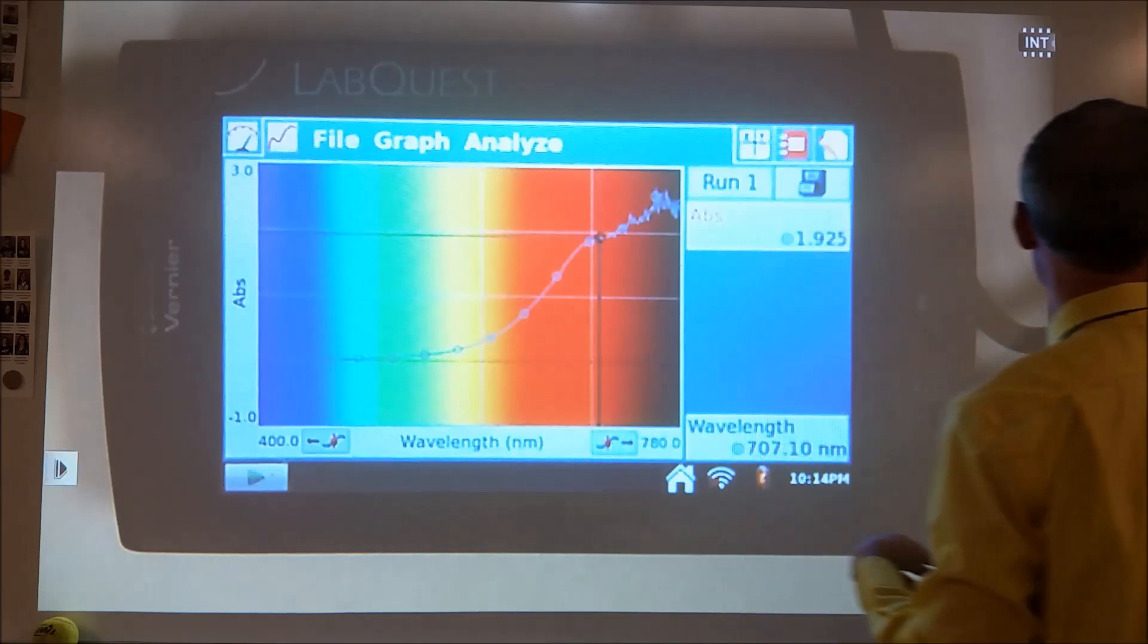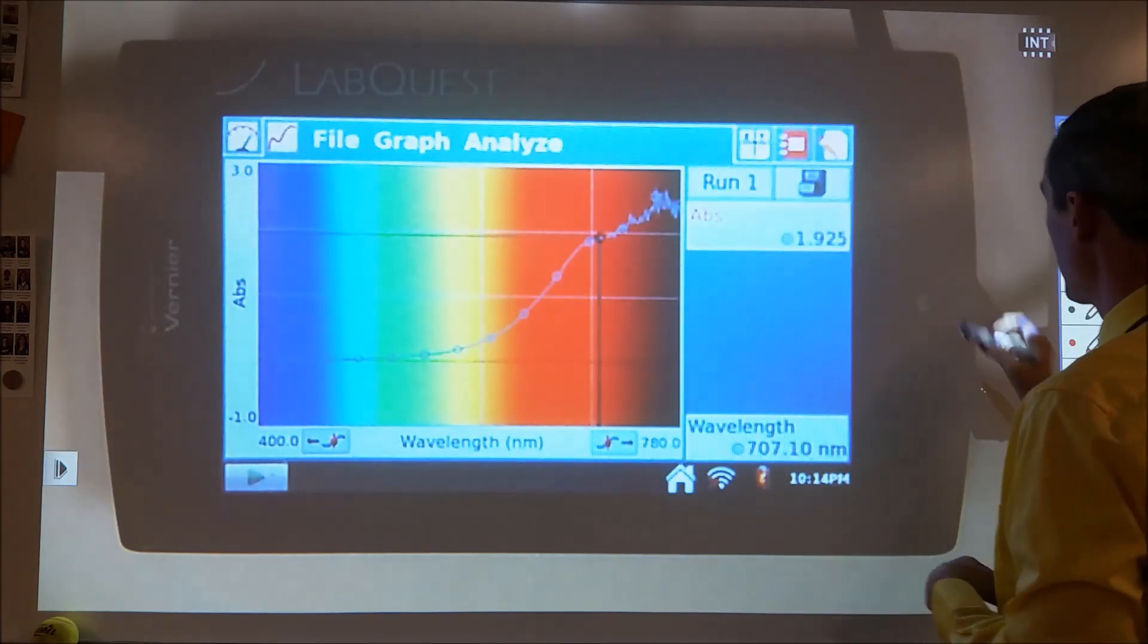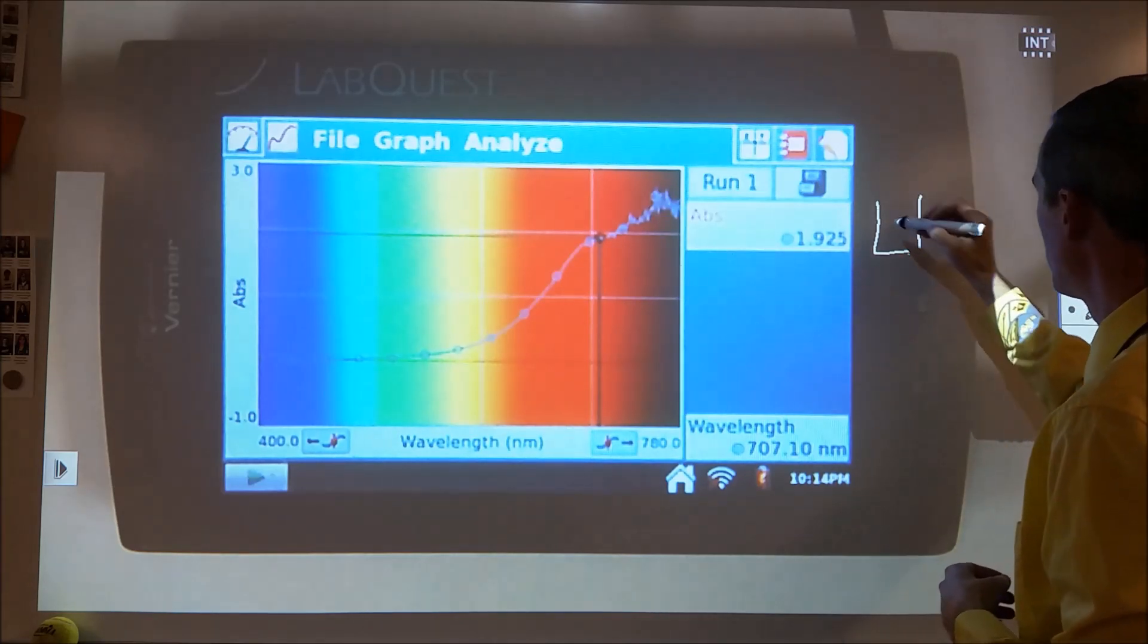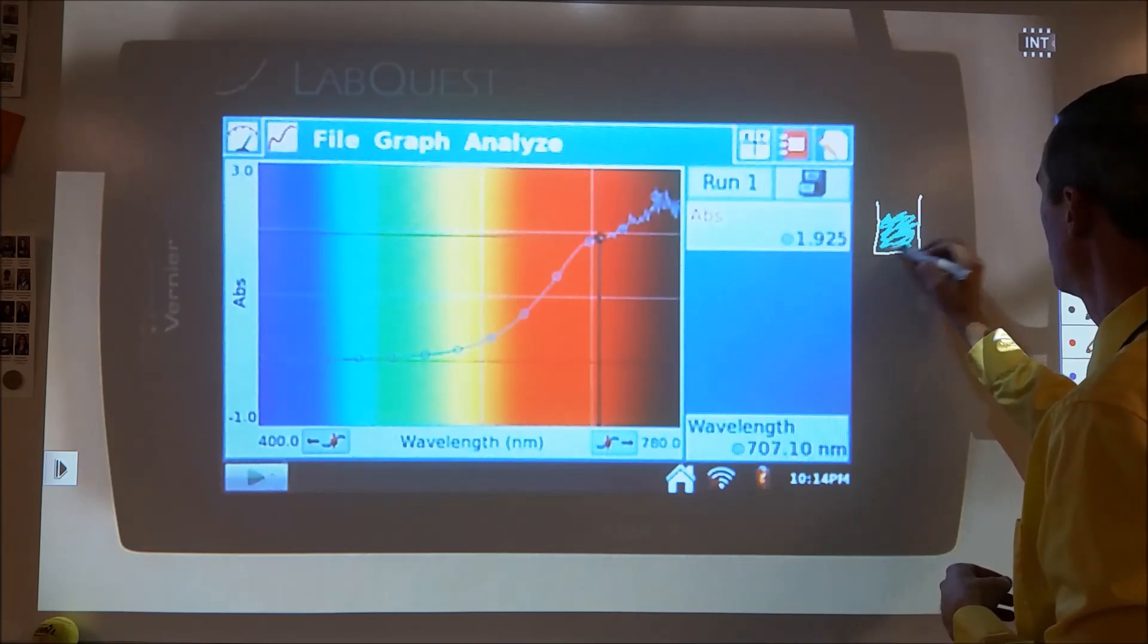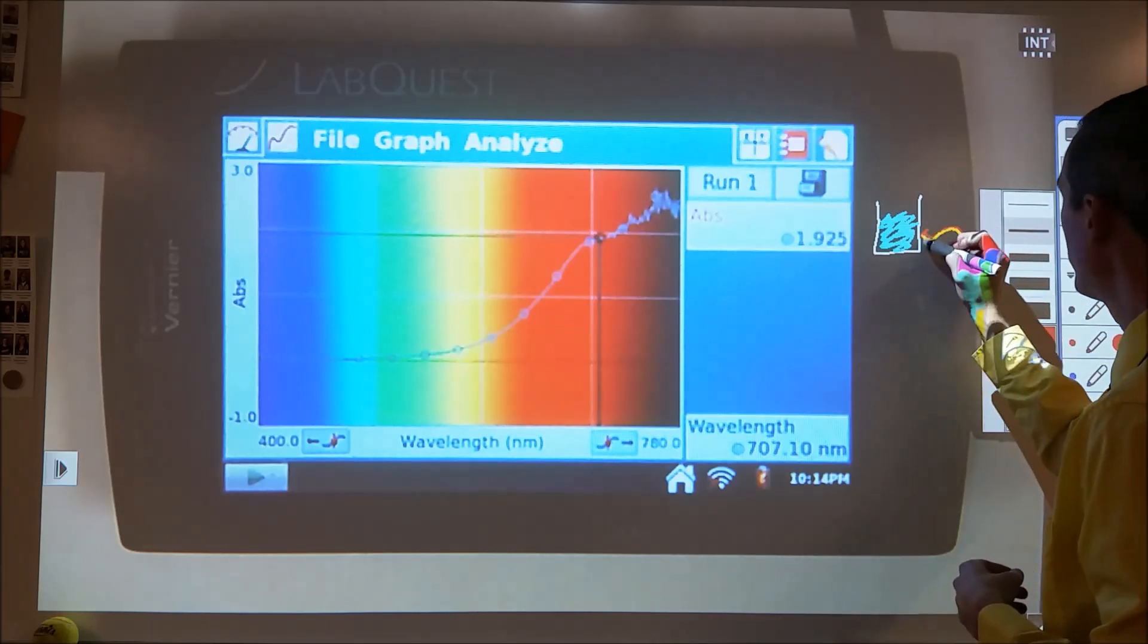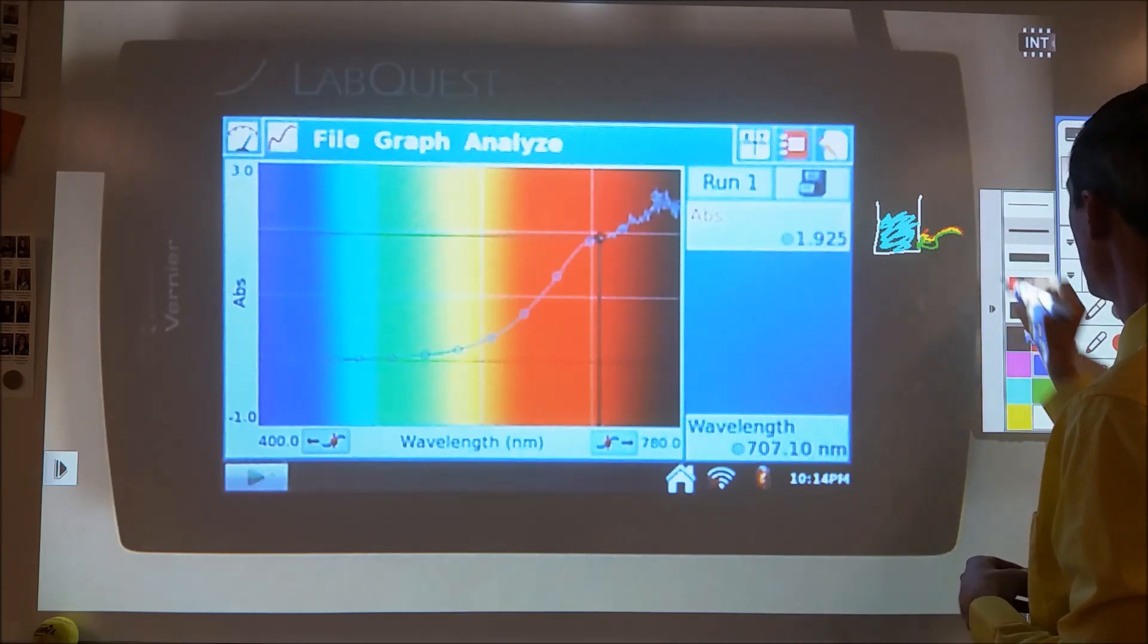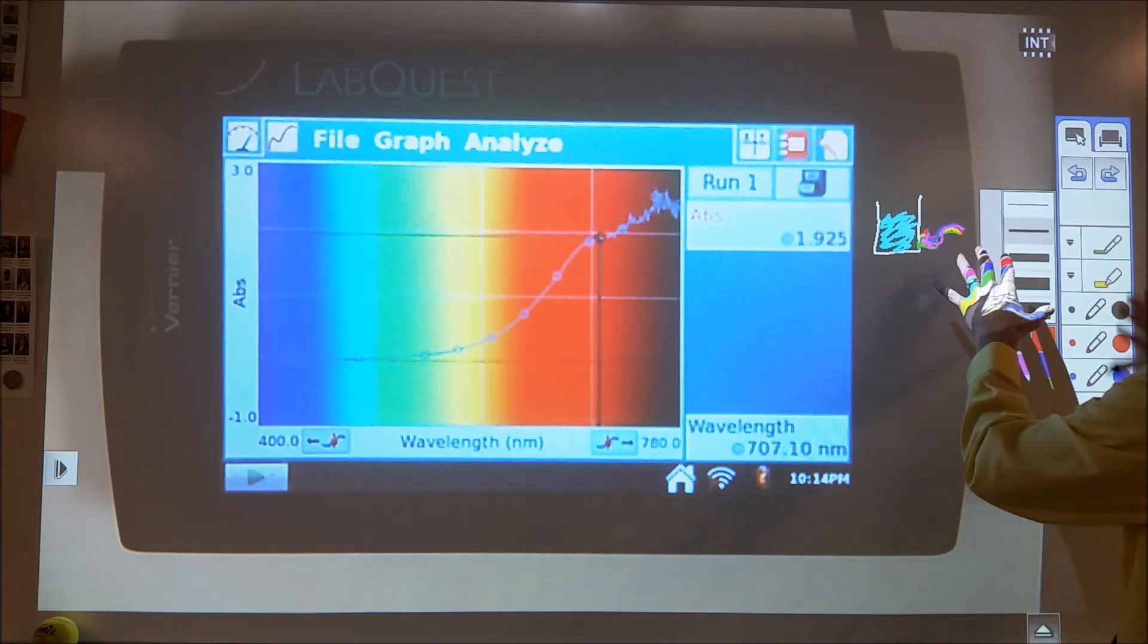I'm going to make a spectrum here where I've got my cuvette and my blue solution, and then I'm going to shine white light through it. White light is a combination of red, orange, yellow, green, blue, and violet. All those colors combined give us white light.